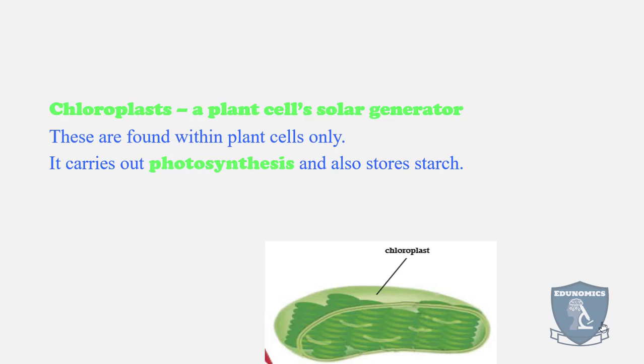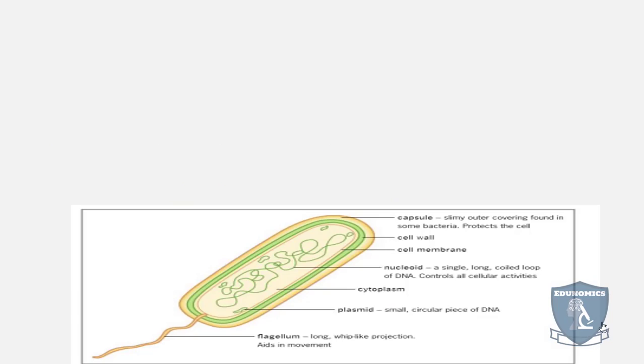The food is stored as starch. Chloroplasts have a green pigment called chlorophyll, and that chlorophyll is what gives the plant its green color.